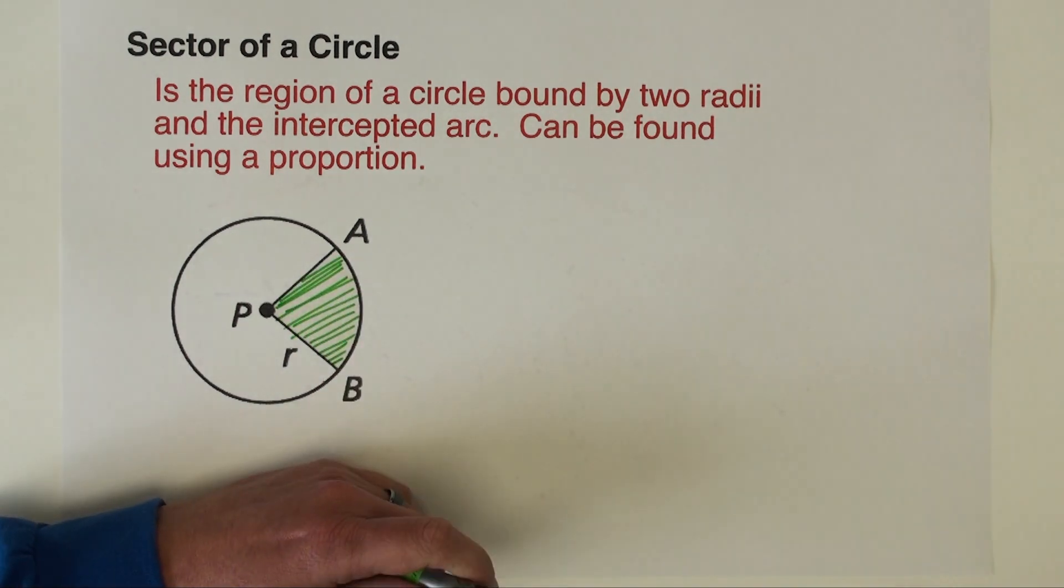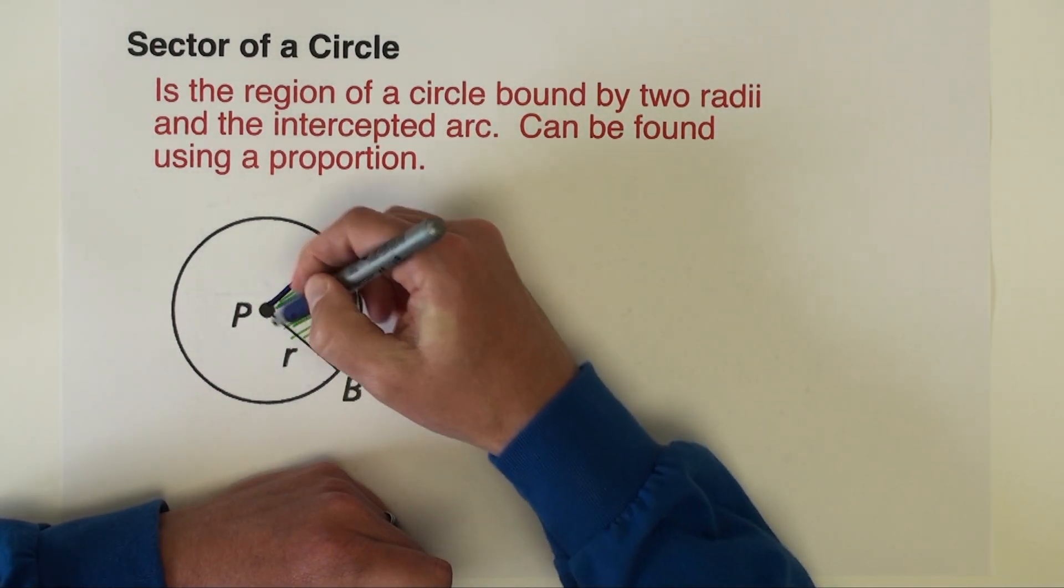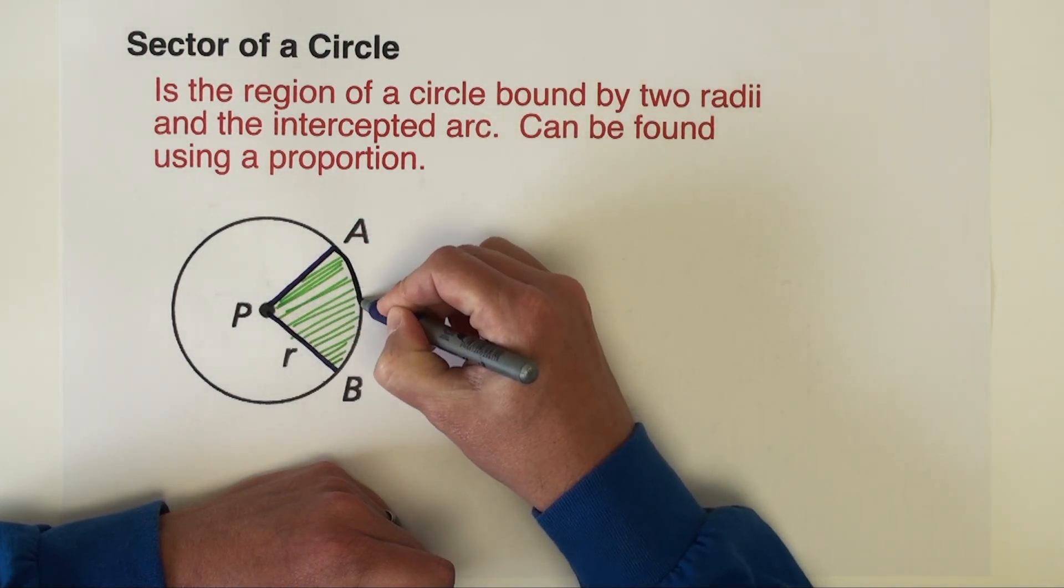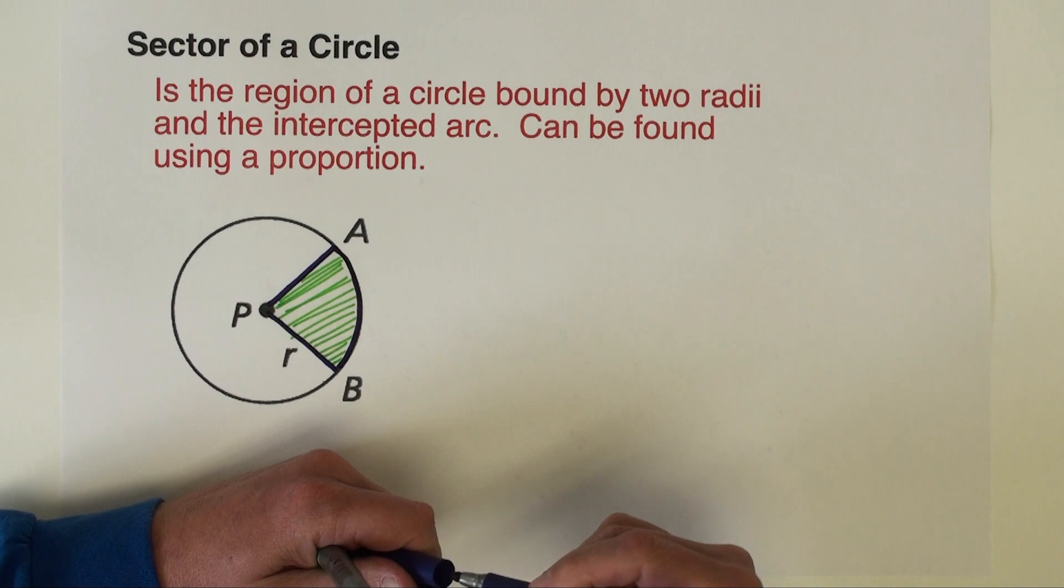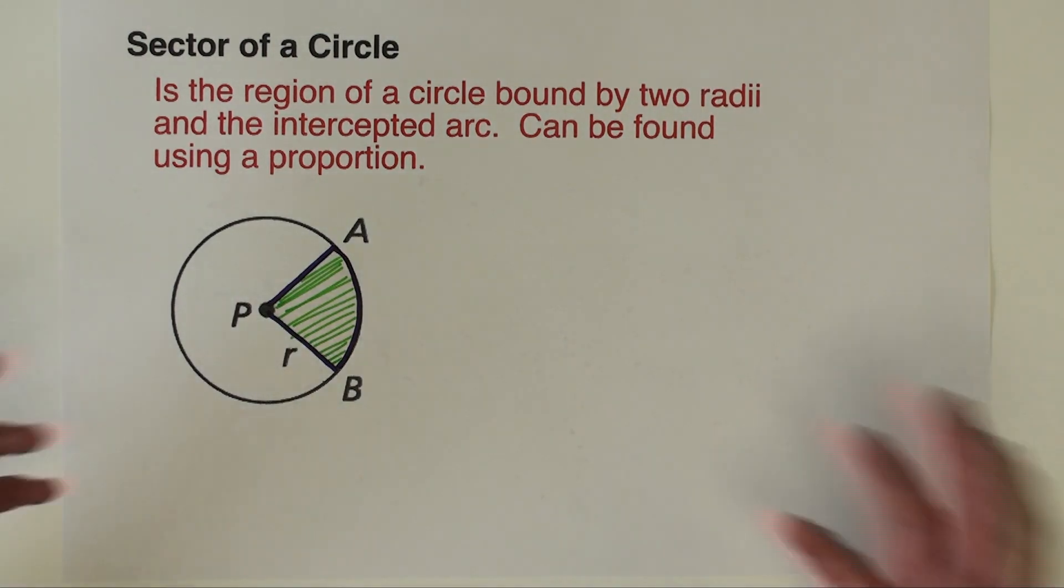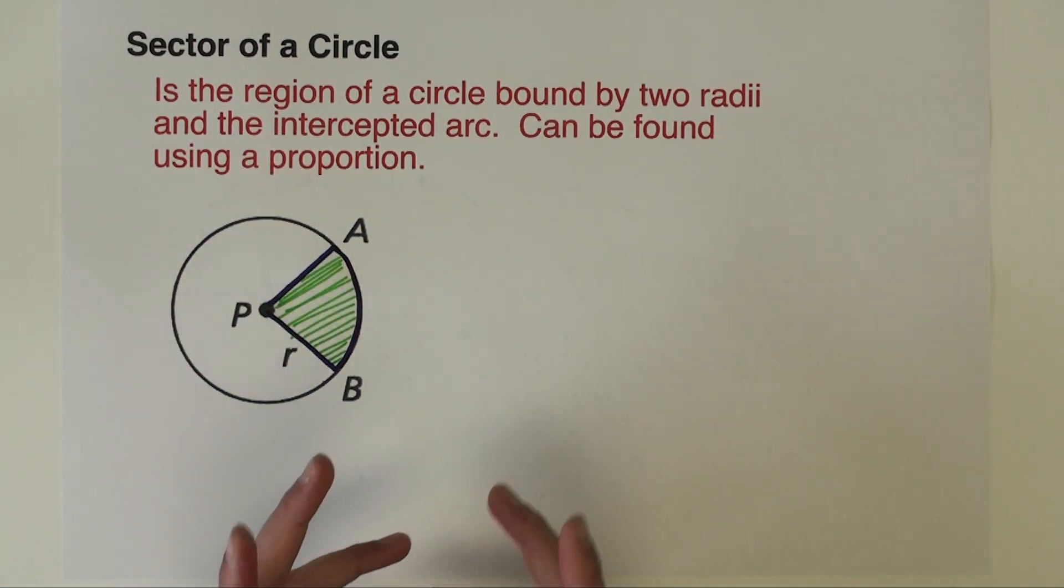Okay, sector is the area of the circle that is bound by two radii. Got these two radii here and the arc that those radii create. You can think of a sector of a circle as like a slice of pizza or a slice of pie if you want to think of it like that. So we're going to go over how to find areas of those slices.